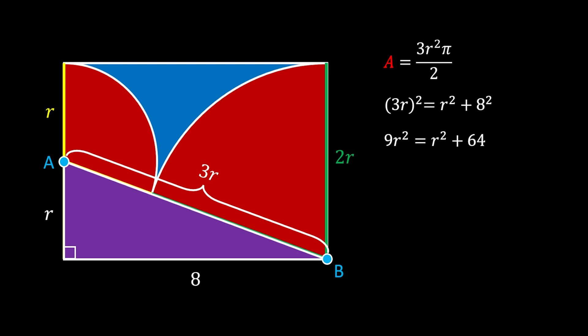We can simplify this and if we put the value of r squared on the left side of the equation we will get the following. If we simplify this more we will get that 8r squared is equal to 64 which means that r squared is equal to 8.